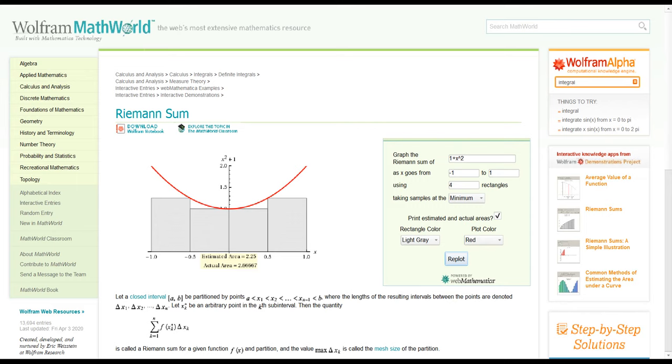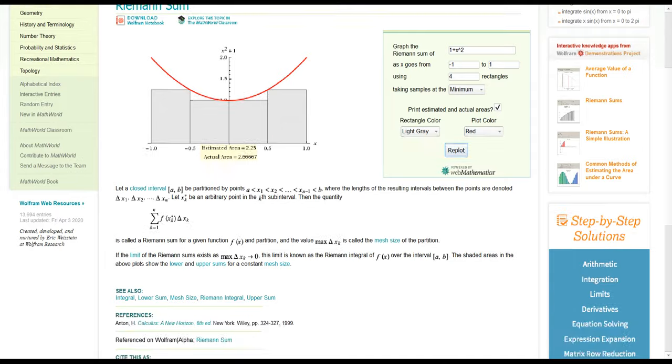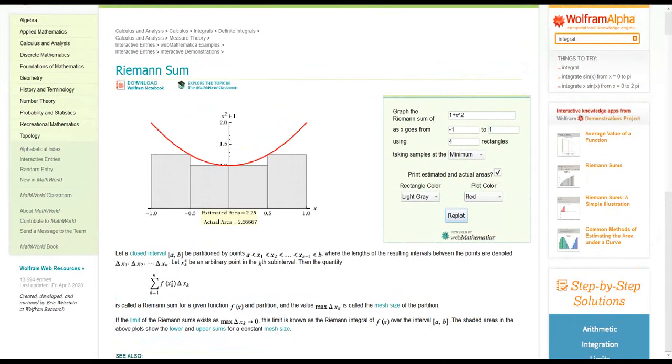You see there's the four rectangles. We did minimum, so we want the lower sum. So the height was determined at negative 1 half, 0, 0, and positive 1 half. And that gave us a value of, where does it hide the number? Oh, it's in this yellow box right here. It gives you 2.25. You can ignore this actual area. That's the true area under the curve. We'll talk about that a little bit later.